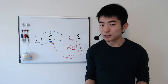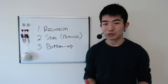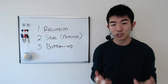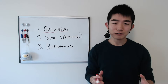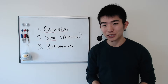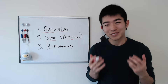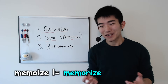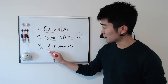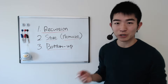Let's see how we can solve this problem using dynamic programming. If you want to solve a problem using dynamic programming there are typically three steps. The first step is to come up with a recursive solution. Then if you notice there are a lot of repeated computations, you can store some of the intermediate results — this process is called memoization, not to be confused with memorize. The third step, if you don't like recursion, is to come up with a bottom-up approach.